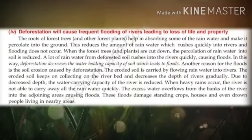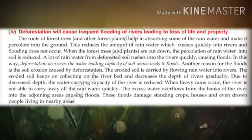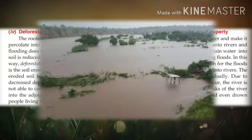When the forest trees are cut down, the percolation of rain water into the soil is reduced. When there are no roots, rain water cannot be absorbed by the soil, so a lot of rain water from deforested soil rushes into rivers quickly, causing floods. In this way, deforestation decreases the water holding capacity of soil, which leads to floods.